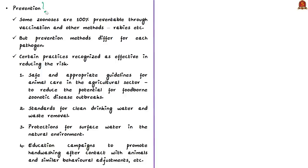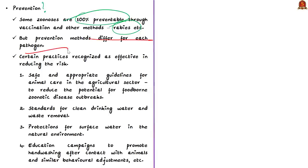Can we prevent zoonotic diseases? The answer is both yes and no. Some diseases are 100% preventable through vaccination and other methods, such as rabies. But it is difficult to have a common prevention method as prevention methods differ for each pathogen. Still, recognized effective practices include cleaning hands, standards for clean drinking water and waste removal, and appropriate guidelines for animal care in the agriculture sector.